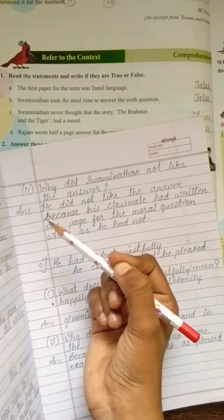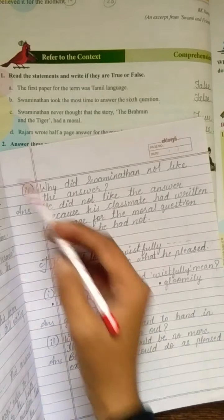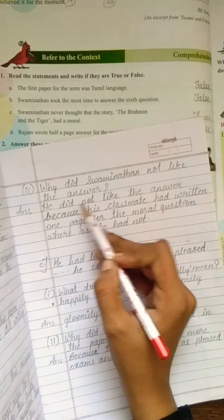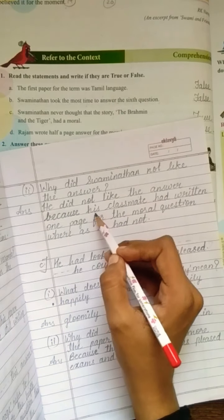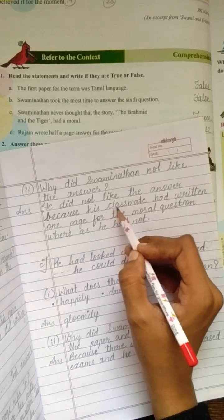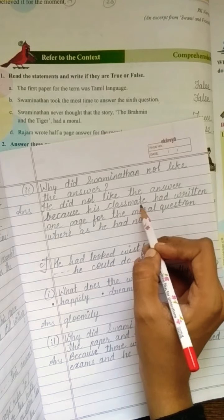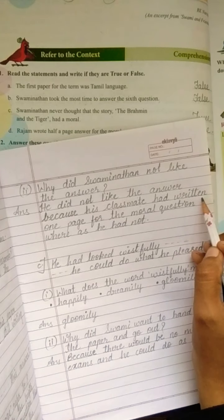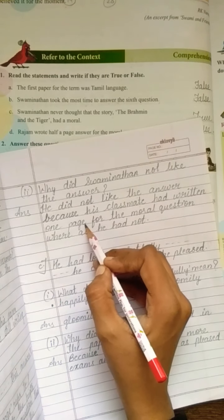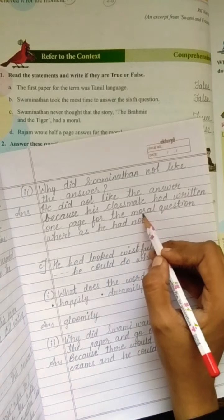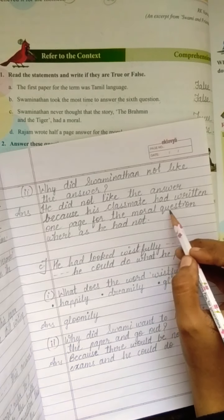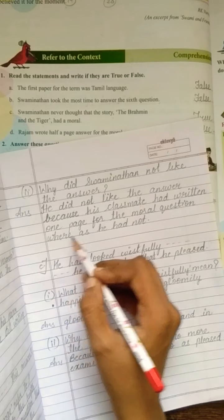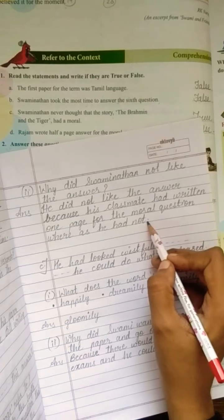So, why did Swaminathan not like the answer? Kyunki Swaminathan ne kitna likha tha only one sentence. And his friend has written one full page. Repeat. He did not like the answer because his classmate, C-L-A-S-S class, M-A-T-E Mate. Classmate had W-R-I-T-T-E-N written one P-A-G-E page for the M-O-R-A-L moral Q-U-E-S-T-I-O-N question. W-H-E-R-E-A-S, he had not.